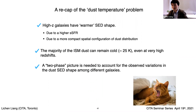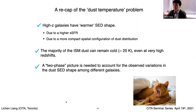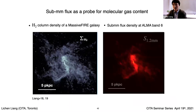To summarize the dust temperature problem: I would recommend using the term 'warmer SED shape' instead of 'physically warmer dust temperature.' High-redshift galaxies do have a warmer SED shape, but that doesn't necessarily mean they are physically hotter at high redshift. To account for the variation of SED shape between different galaxies, it will be more useful to have a two-phase picture of interstellar dust.